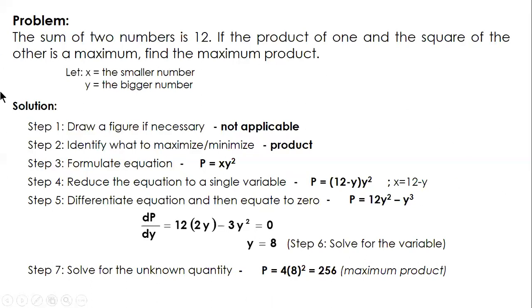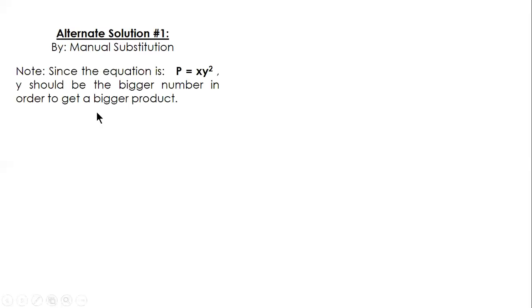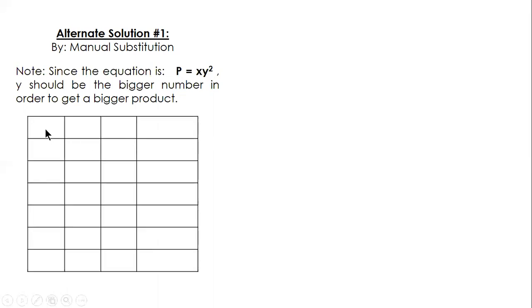That's the proper way of solving this problem. The advantage of this procedure is that the solution is systematic—you won't go back and forth because you have step-by-step guidance. The first alternate solution is by manual substitution. This is common in reviews. If you look at the equation P equals xy squared, and we want to get a bigger product, y should be the bigger number. So to make it clear, construct a table.